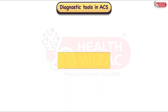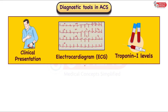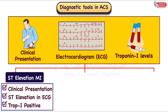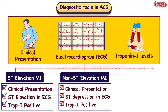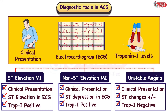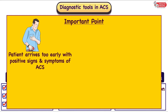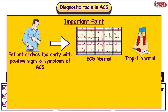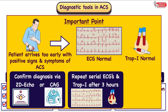Based upon clinical presentation, ECG findings, and troponin I level, the patient can be diagnosed with one of three variants of ACS. First, ST elevation MI — clinical presentation favors ACS, ECG shows ST elevation, and troponin I is positive. Second, non-ST elevation MI — clinical presentation favors ACS, ECG shows ST depression, and troponin I is positive. Third, unstable angina — clinical presentation favors ACS, but ECG may show ST-T changes or may be normal, and troponin I is negative. Importantly, if a patient arrives early with positive signs and symptoms but ECG and troponin I are normal, the diagnosis should be confirmed with 2D echo or coronary angiography, or the patient should be admitted with serial ECG and troponin I repeated after 3 hours.